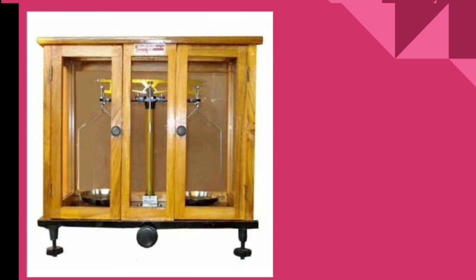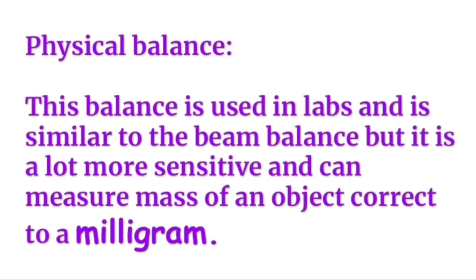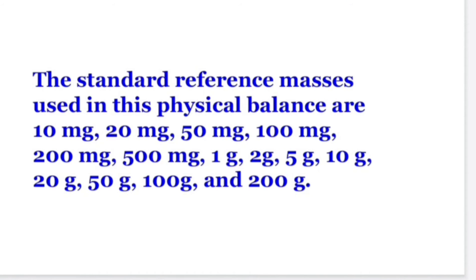Physical balance. The balance is similar to the beam balance, but it is a lot more sensitive and can measure mass of an object correct to milligram. The least count of the physical balance is milligram. Milligram is the very smallest value that can be measured by the physical balance. Physical balance is more sensitive than the beam balance.